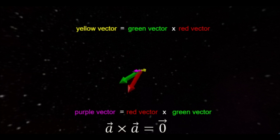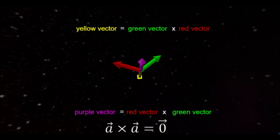In fact, if you take the cross product of any vector with itself, you will always get zero. That's some serious asymmetry.